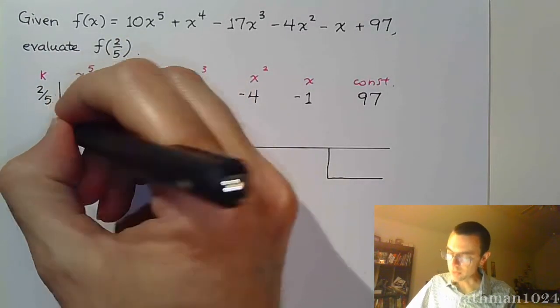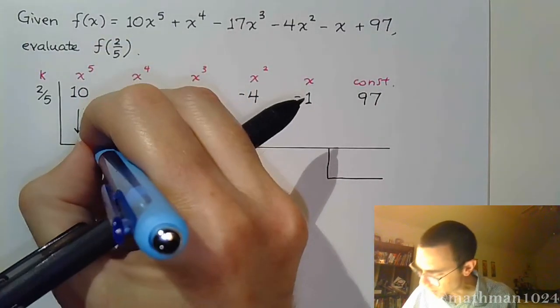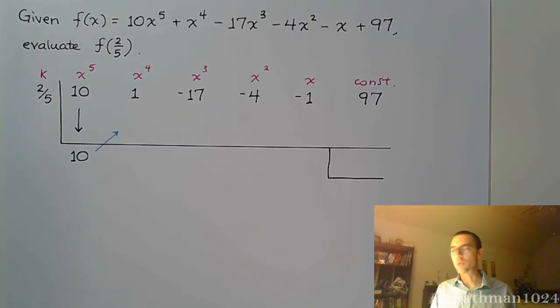So, as we always do, we bring that lead coefficient straight down, and now we need to multiply. So there are two ways of doing the multiplication if you don't want to write everything out.